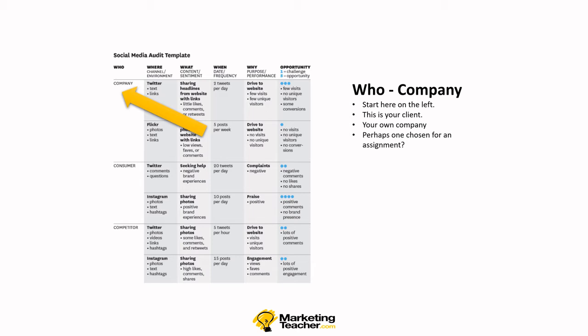Looking at the framework, across the top we have Who, Where, What, When, Why, and then an Opportunity column which is assessed. We take three different approaches or overviews: the Company, which is your company or the one you're auditing in terms of social media; the Consumer, which is the person, people, or organizations we're targeting; and then Competitor.